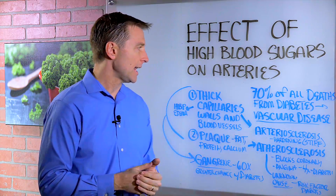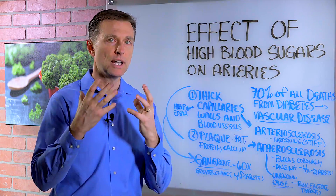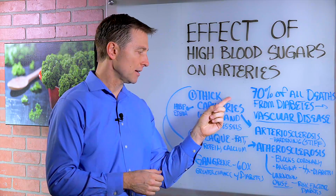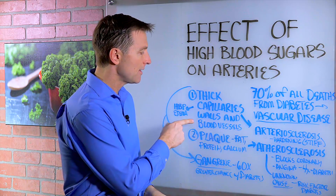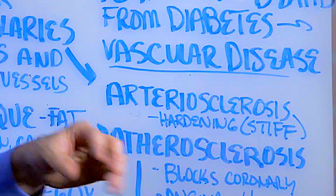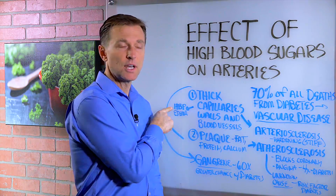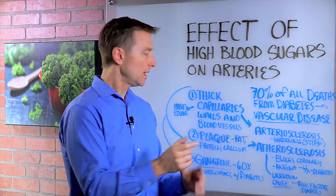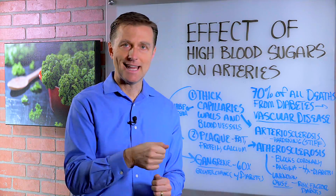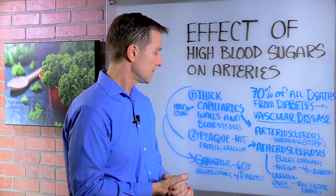There are a couple of things that happen in relationship to high sugar and what it does to the arteries. Number one, it makes the capillary walls thicker — it makes the walls of the blood vessels thicker. The name for that is called arteriosclerosis, which is hardening of the arteries where they become very stiff. You're also going to see high blood pressure because there's no elasticity anymore, and you're going to see edema in the ankles and the feet. If you press on the foot, it leaves a dent — it's called pitting edema — because of the loss of capillary function.